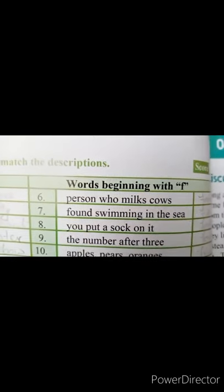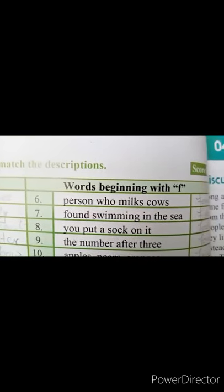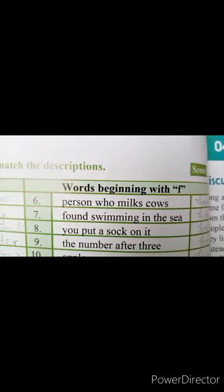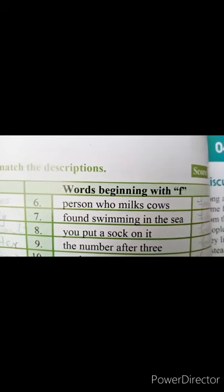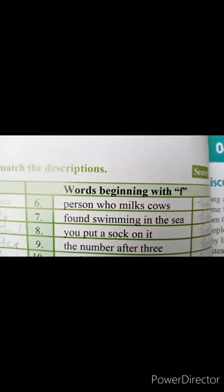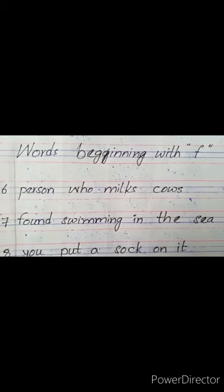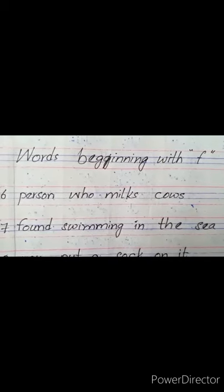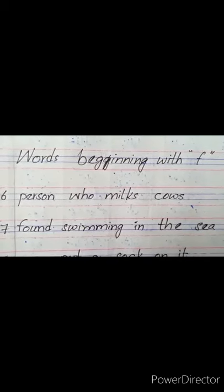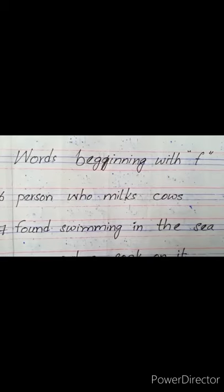اب اسی exercise A کا part 2 — اب آپ نے وہ words لکھنے ہیں جو F سے start ہوتے ہیں — words beginning with F. The sixth one is 'person who milks cows'. Person who milks cows — وہ شخص جو گائے کا دودھ دوہتا ہے — it is called 'farmer' — F-A-R-M-E-R.